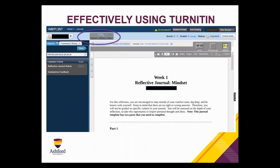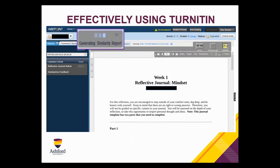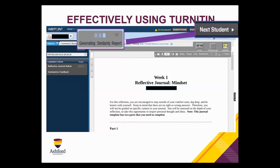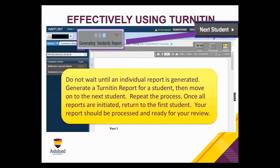One complaint I hear about Turnitin within Waypoint is: when I click to request the similarity report, it generates and it takes forever — and that's why people say they don't use it very often. My response is: don't wait on the Turnitin report to generate. Go click on next student. When that pops up, click to generate that Turnitin report, then click next student. Just toggle back and forth — generating reports, next student. Don't wait for the individual report. Once you finish running all the Turnitin reports for your class and return to the original student, odds are the report will be there waiting for you. Saves a boatload of time.